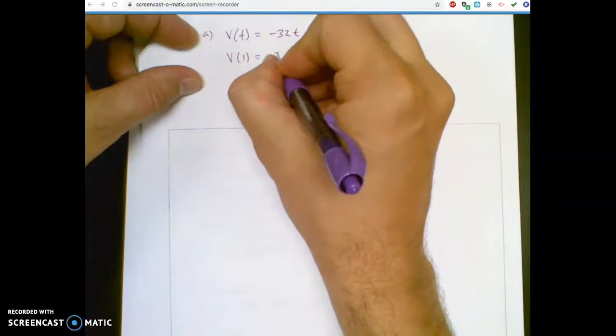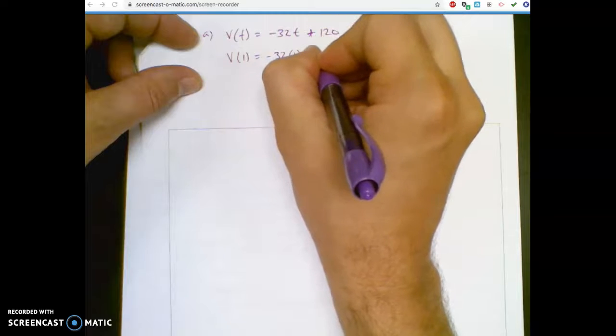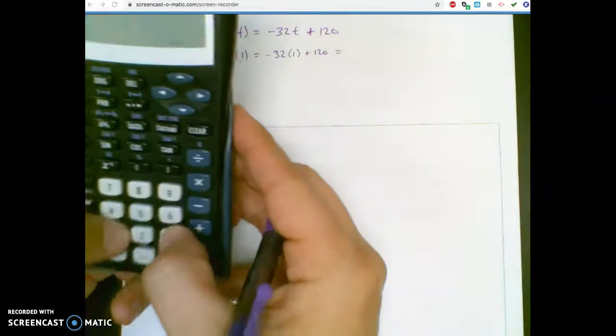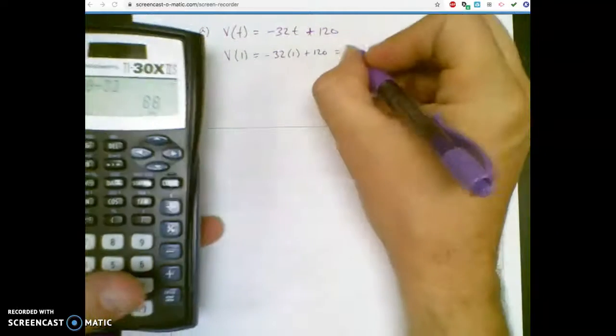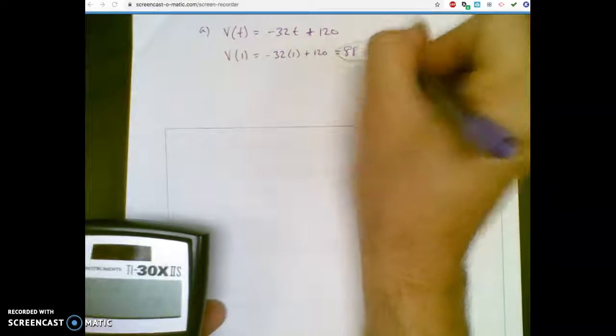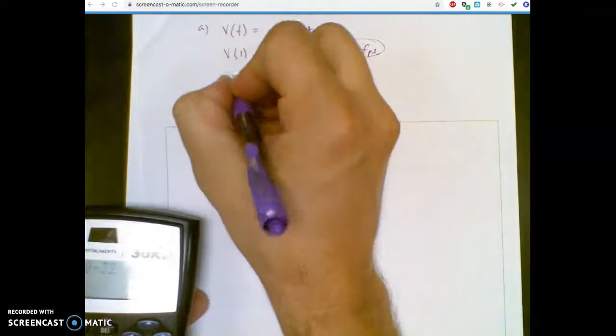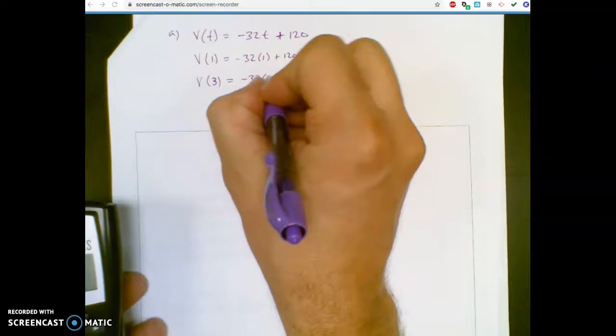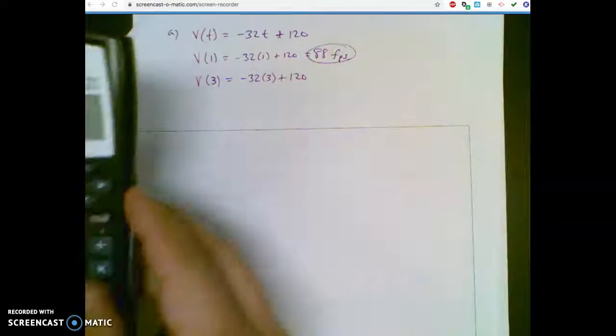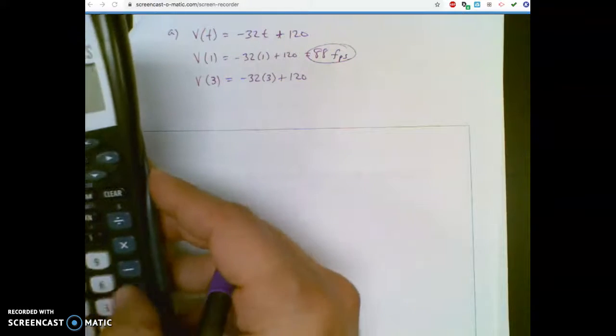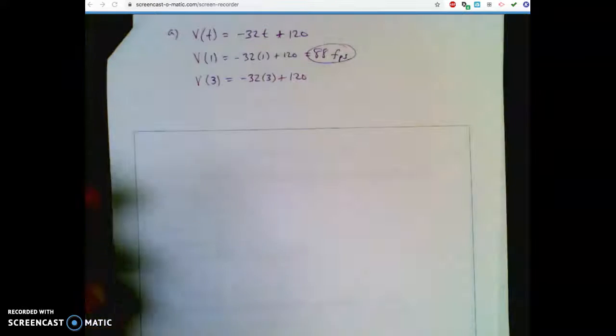So velocity at 1 second is going to equal 120 minus 32. So it's going to be 88 feet per second. Okay, so that's 1 second. So it's already slowing down because you shot it upward. Velocity at, I think it's at 3. Yeah. At 3 seconds, you're going to be negative 32 times 3 plus 120. 120. Negative 32 times 3 plus 120. I just typed it in and I get 24.